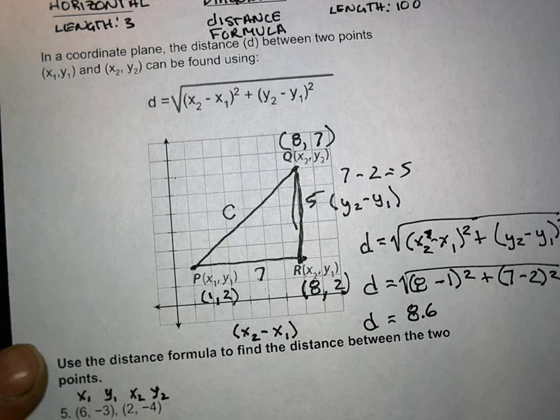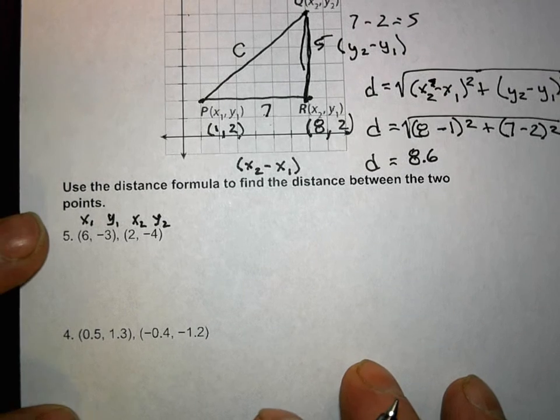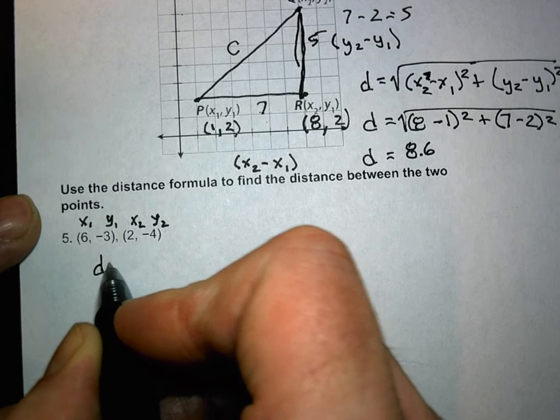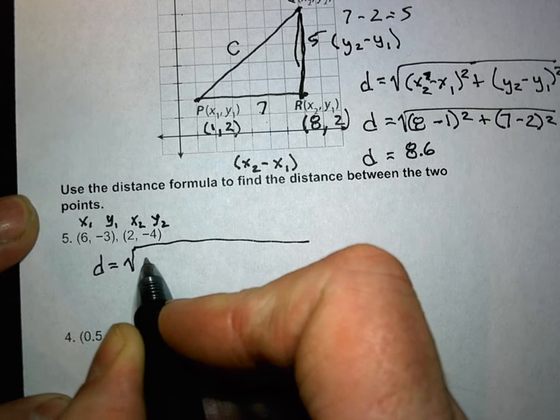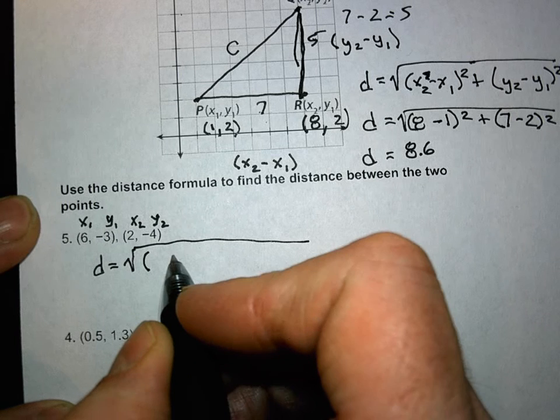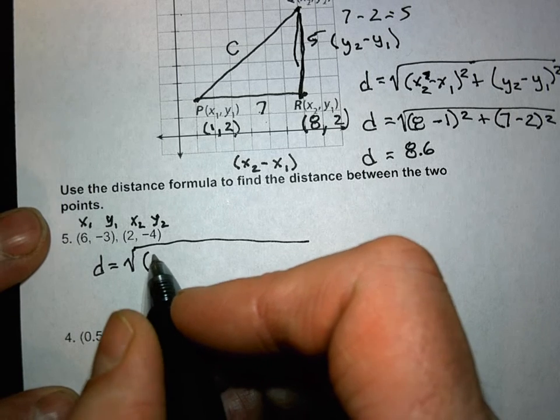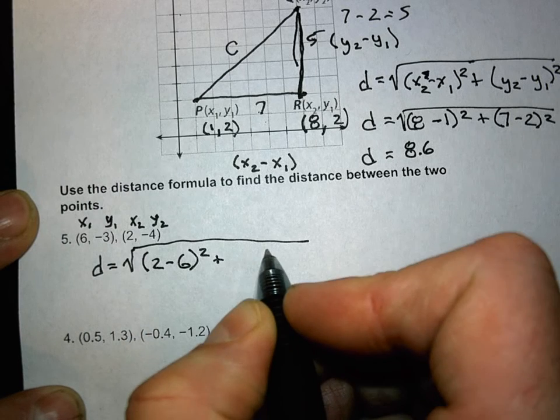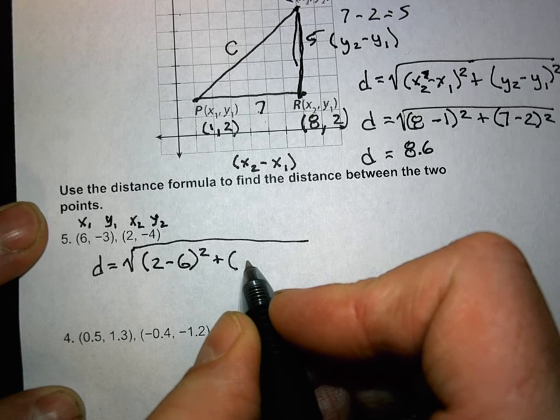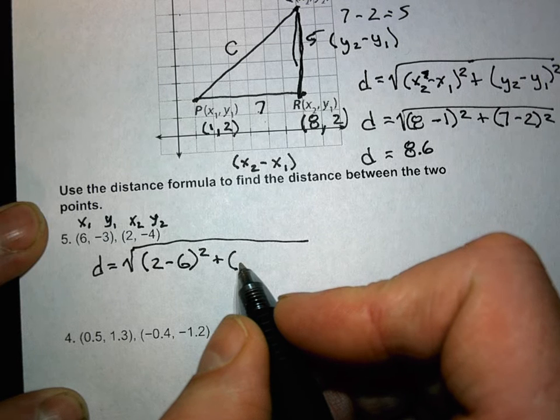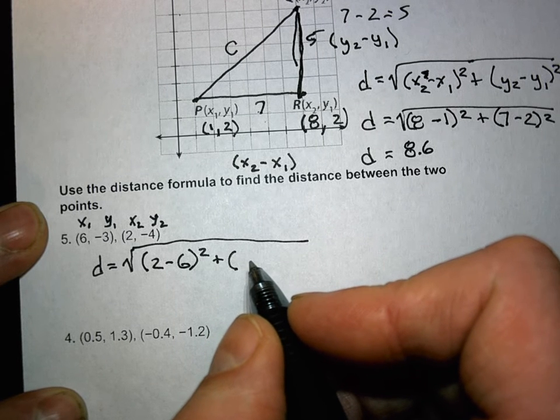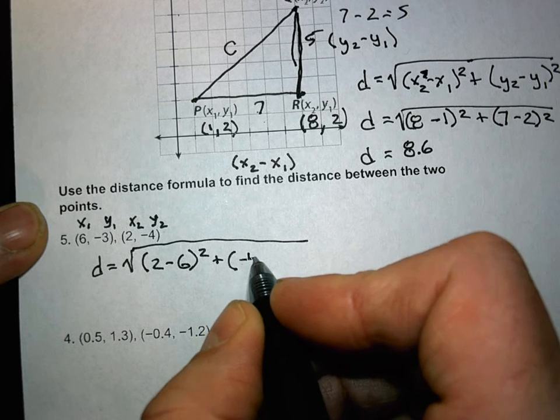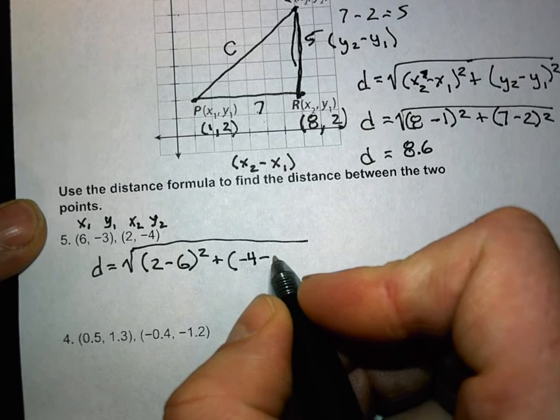Now, we've got points. First thing you guys need to do when you get your points, and the thing that I see the least of, is go x sub 1, y sub 1, x sub 2, y sub 2. Do that on your points. That way, when you're starting to type things in, there's somebody that's going for speed versus accuracy, and it doesn't work in math. So d equals, remember we got that big square root, x sub 2. What's x sub 2? 2 minus x sub 1 squared plus y sub 2. What's y sub 2? Negative 4 minus y sub 1, which is? Negative 3. My bad.